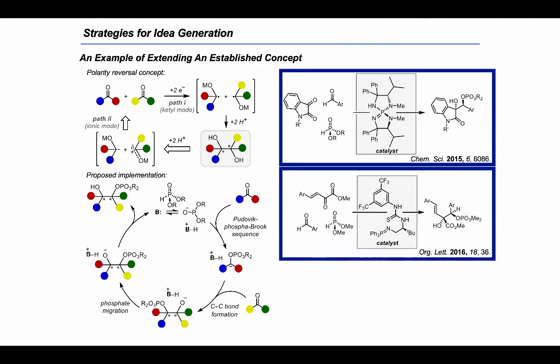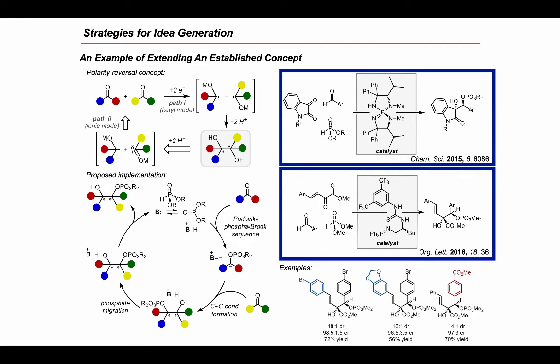We subsequently extended this concept further by replacing the isatin with a benzylidene pyruvate, although in that case we relied on a different chiral Brønsted basic organocatalyst for the asymmetric reaction. These are some examples of the types of products that could be reached through that process.